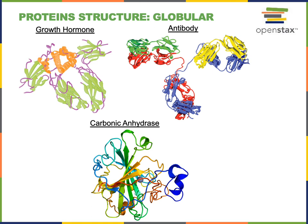Globular proteins have a complex shape, and the function of those proteins is heavily dependent upon the complex folding that creates the globular protein's shape. There is a very wide variety of functions for globular proteins. Growth hormone is a type of globular protein that functions as a chemical message — it is secreted from the anterior pituitary gland and signals cells throughout the body to stimulate growth. Antibodies are proteins secreted by white blood cells of our immune system that help defend against specific infections. When you are vaccinated and develop immunity to a specific pathogen, your body will start to produce antibodies that can protect you against that specific infection.